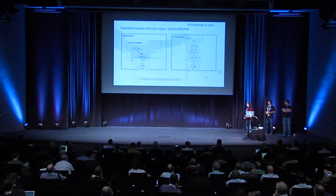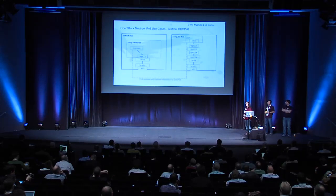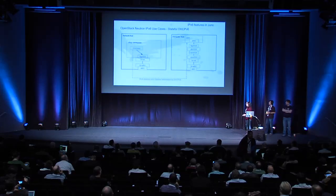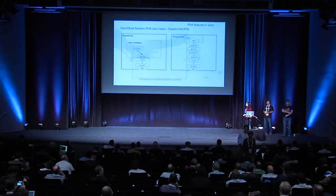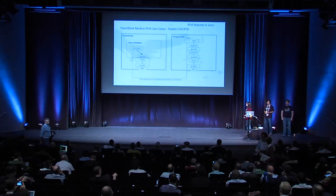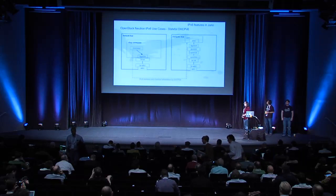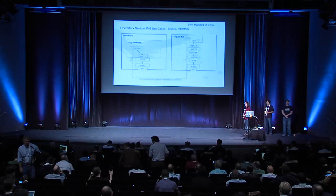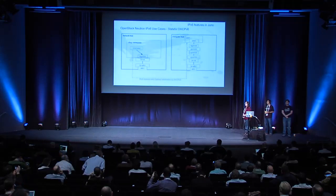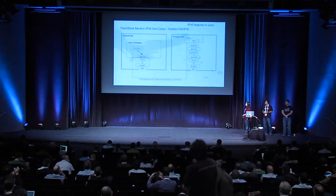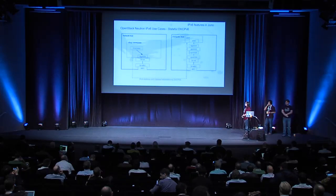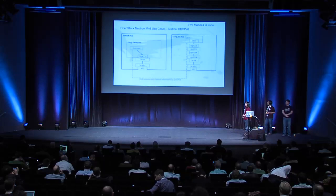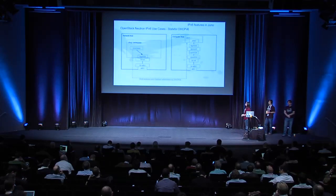For stateful DHCPv6, there will be no RADVD process spawned by OpenStack unless there is another SLAAC or DHCPv6 stateless subnet in the same network. In this case, the address, the default route, and optional information will all be discovered from DHCPv6 running via dnsmasq on the DHCP namespace. This is very similar to IPv4 DHCP.